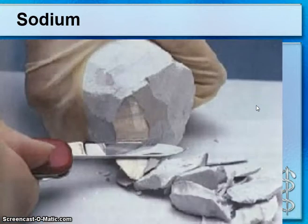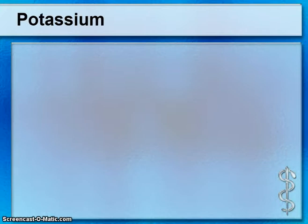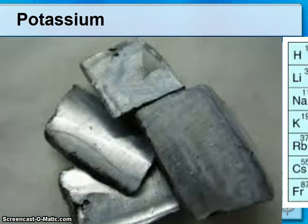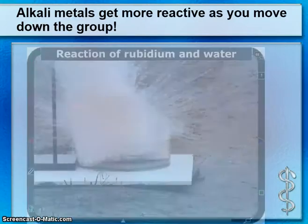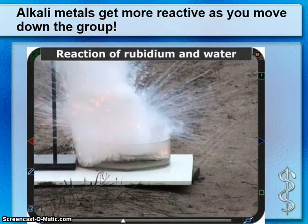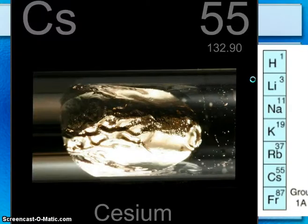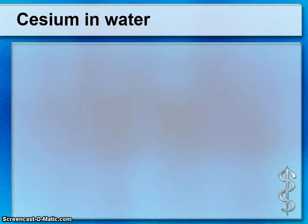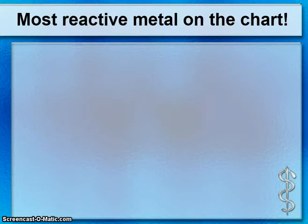Sodium is shiny and soft. As we go down the list, potassium looks very similar because elements in the same group look and act very similar. As we go down the group, reactivity increases. Rubidium reacts very violently in water.